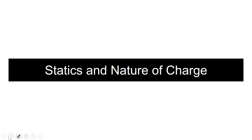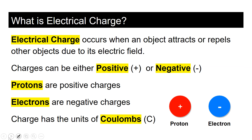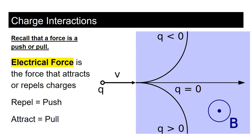Charge — like protons, electrons, neutrons — this is the most fundamental concept in electromagnetism that you need to understand. Electrical charge occurs when an object attracts or repels other objects due to an electric field. Charge can be either positive or negative: protons are positive charges, electrons are negative charges. The unit of charge is Coulombs, written with a capital C. For example, positive four Coulombs and negative four Coulombs have the same magnitude.